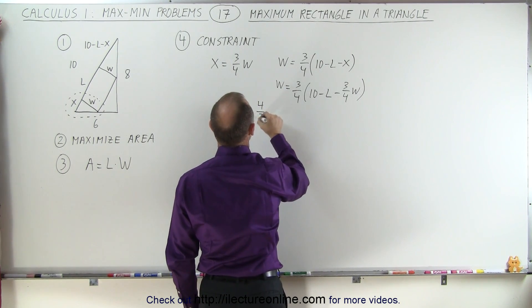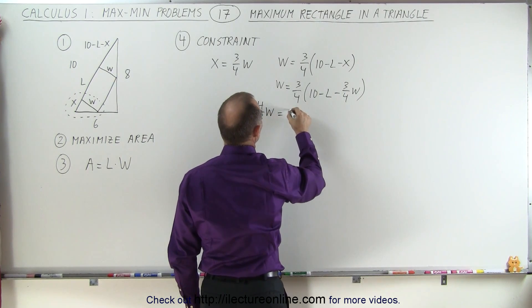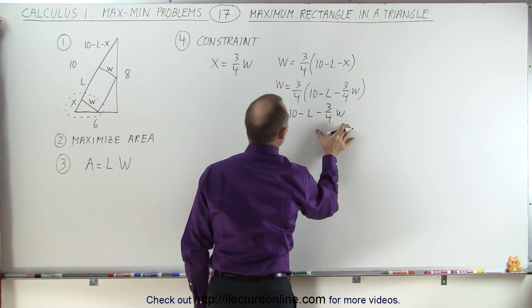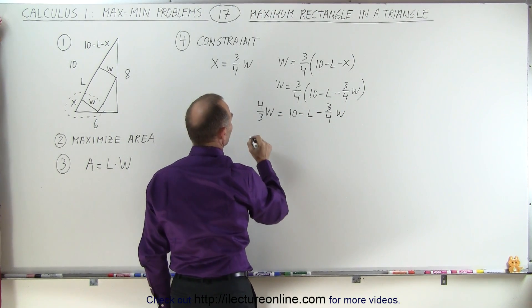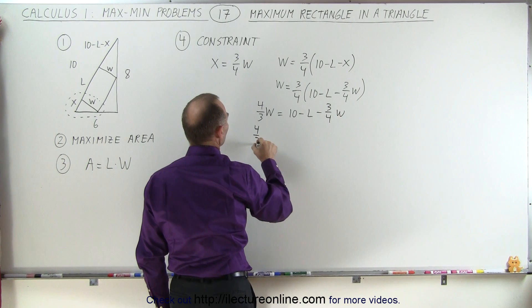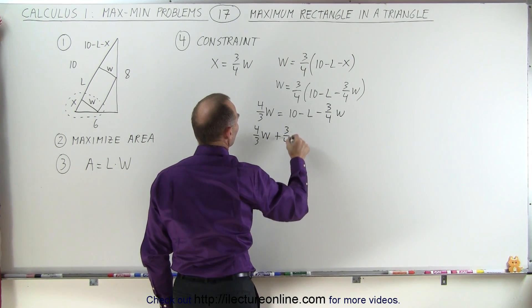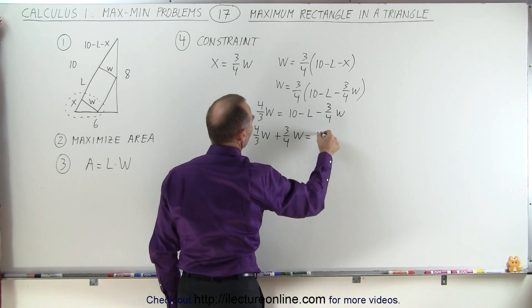So we have 4 thirds W is equal to 10 minus L minus 3 quarters W. So move all the W's over to one side. We have 4 thirds W plus 3 quarters W is equal to 10 minus L.